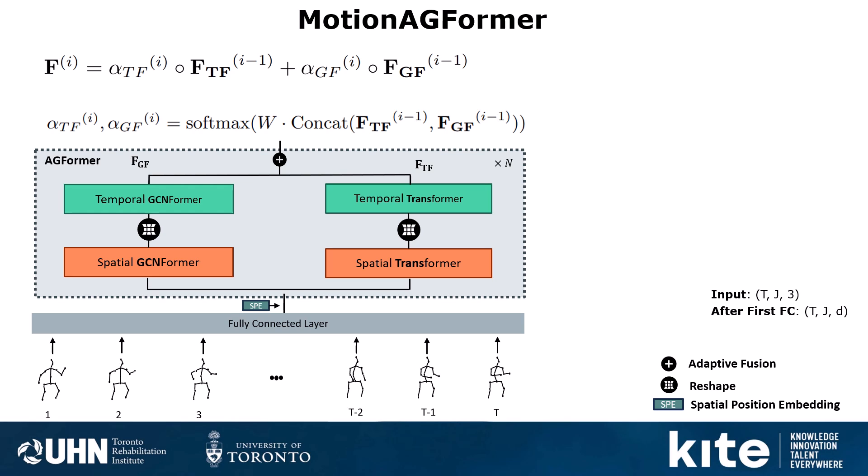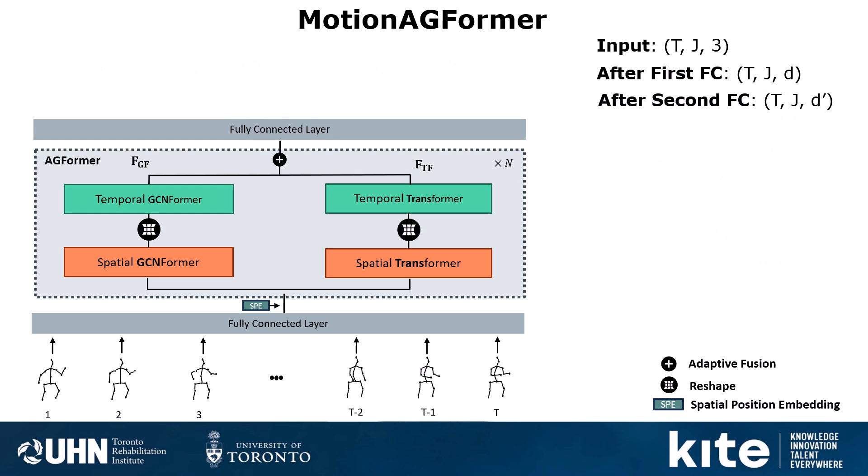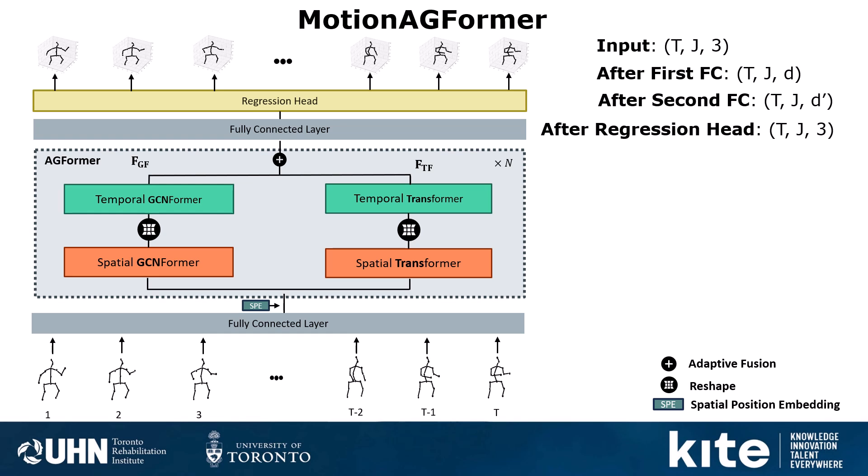After repeating the AGFormer module n times, we pass them to a fully connected layer which changes the channel dimension from D to D', and finally a regression head for outputting XYZ for each joint and each frame.